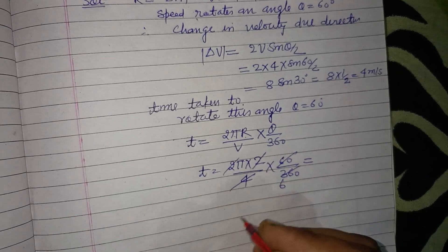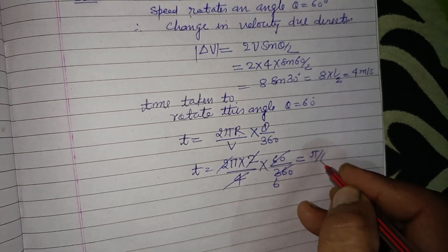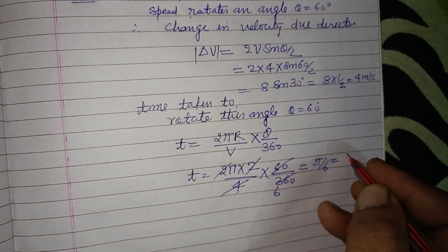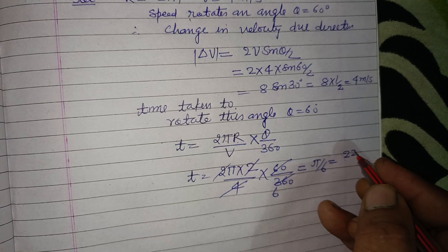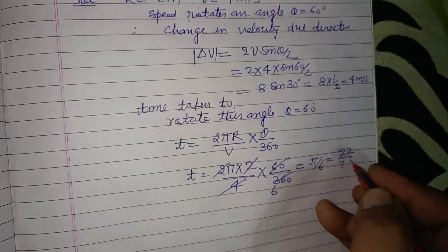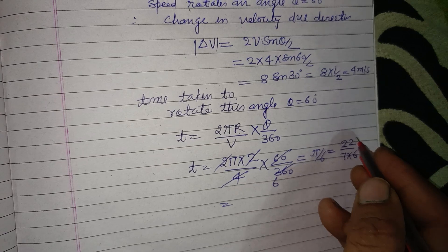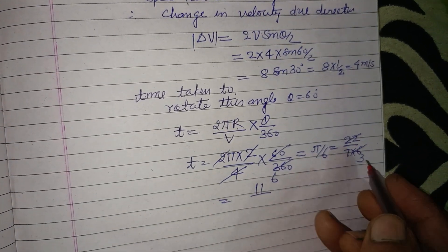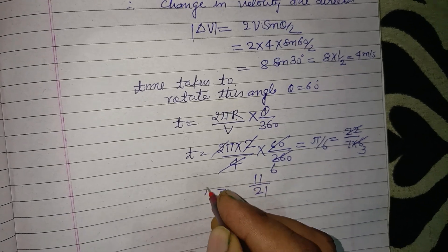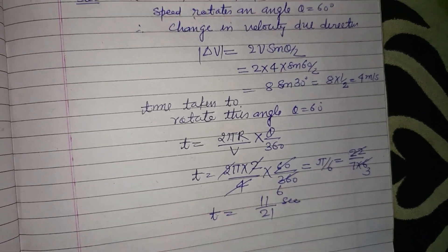60, 1 by 6. So this is pi by 6. Or we write pi value 22 over 7 into 6. So this is 11 upon 21 second. So time is this.